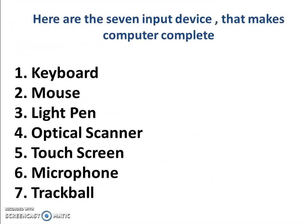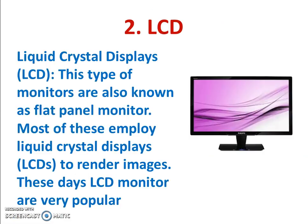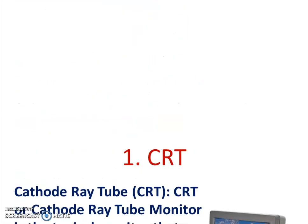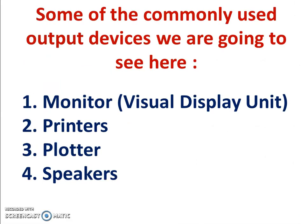So students, we have learned about output devices. As I have told you, this is the third part of Basic of Computer. In the second part, I told you about input devices — seven input devices: keyboard, mouse, light pen, optical scanner, touch screen, microphone, and trackball. And the main output devices we have seen are monitor, printer, plotter, and speaker.